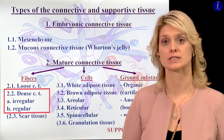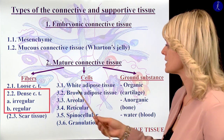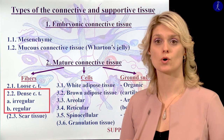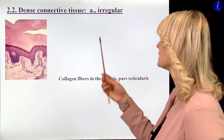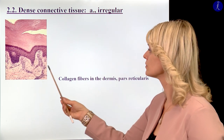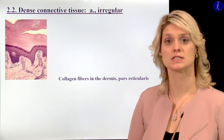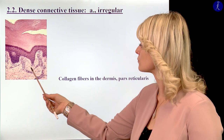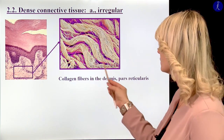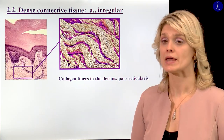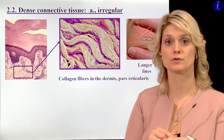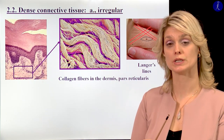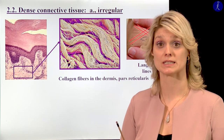Now I would like to continue the description of the dense connective tissue. Within the dense connective tissue, we can talk about irregular and regular dense connective tissue based on the orientation of the fibers. The irregular dense connective tissue — irregular collagenous connective tissue — is visible within the skin, within the second layer after the epidermis: the dermis. In the reticular part of the dermis, we can find collagen fibers which form a meshwork. On the surface of your skin, you can see lines called Langer's lines, which show you the orientation of the collagen fibers within the dermis.